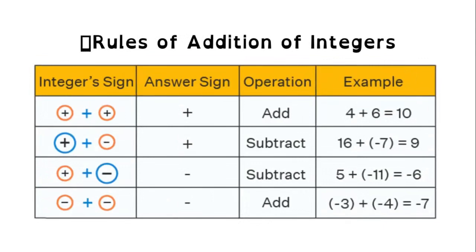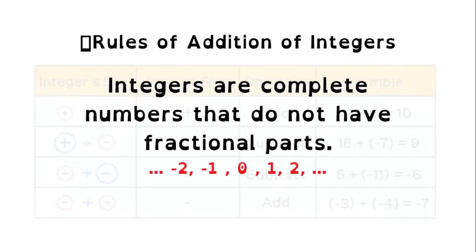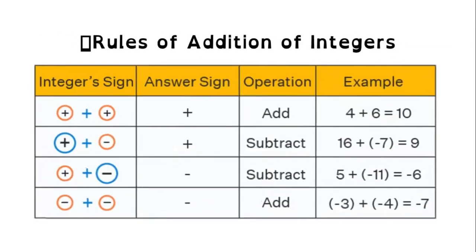There are certain rules to be followed to add two or more integers. Integers are complete numbers that do not have fractional parts. It includes positive integers, zero, and negative integers. The rules for the addition of integers can be understood with the help of the table given below.